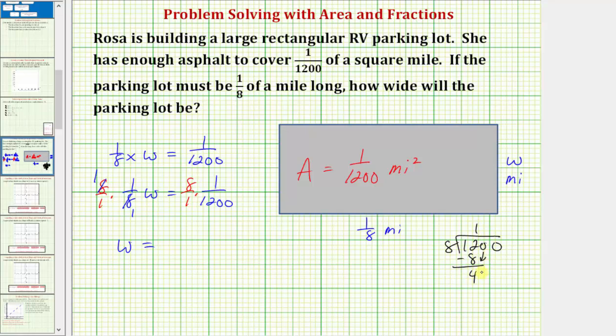Bring down the next digit, which is zero. Ask how many eights there are in 40, which is five. Five times eight is 40. Subtract. Zero. Bring down the last zero. Ask how many eights there are in zero, which would be zero. Zero times eight is zero. We subtract. We have a remainder of zero.